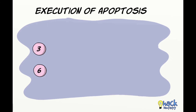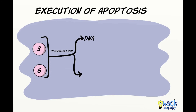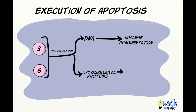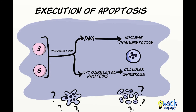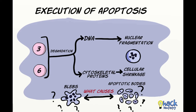Executioner caspases 3 and 6 cause degradation of chromosomal DNA and also degradation of cytoskeletal proteins, which cause morphological changes such as nuclear fragmentation and cellular shrinkage respectively. However, it is not yet known what causes changes like cellular blebs and apoptotic bodies.